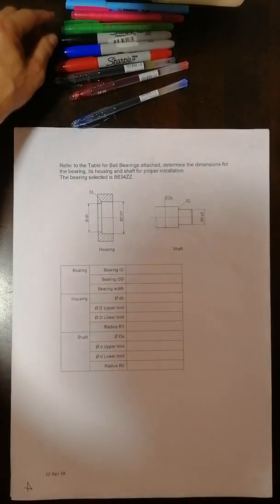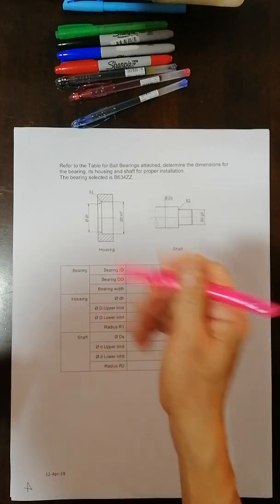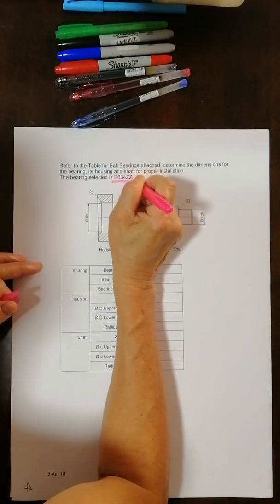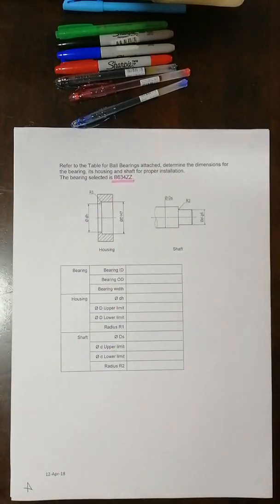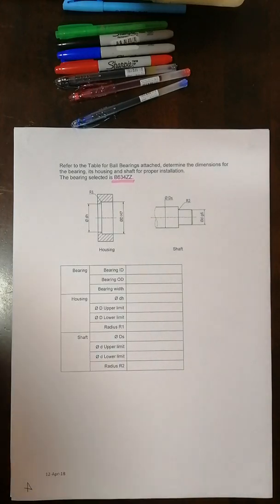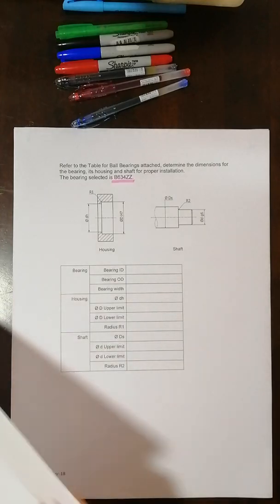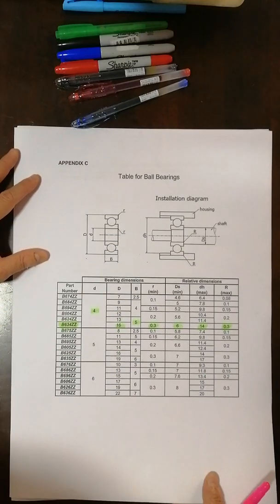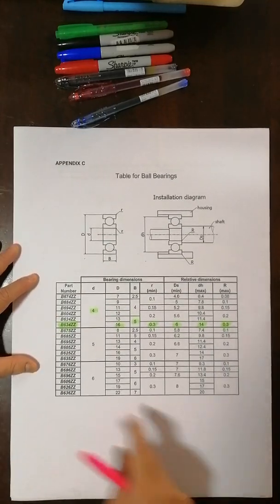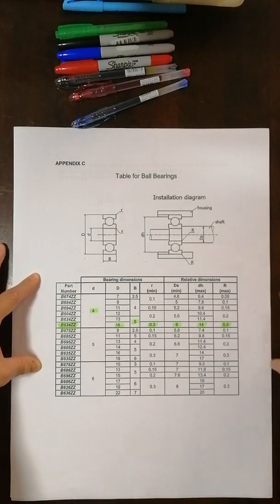The bearing identified is B634ZZ. So let's go and get the dimension of all the bearing first. Let's look at the table here. I have already highlighted in green the numbers. Can you please take note of that?